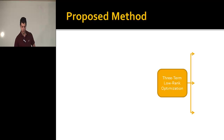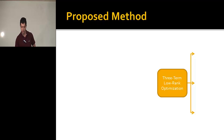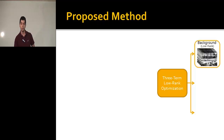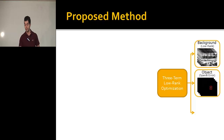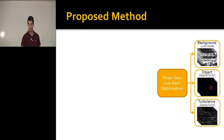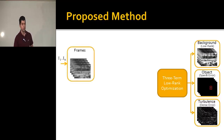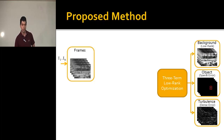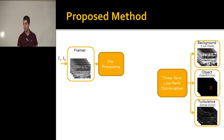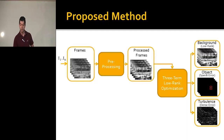Our method is called the three-term low-rank optimization. We decompose the sequence into the background, which is the low-rank component, the object, which is the sparse component, and the turbulence, which is the dense error. The input is frames taken from an IR camera, which have bad quality, so we apply standard preprocessing steps including histogram equalization and temporal averaging before inputting the processed frames to the three-term low-rank optimization.